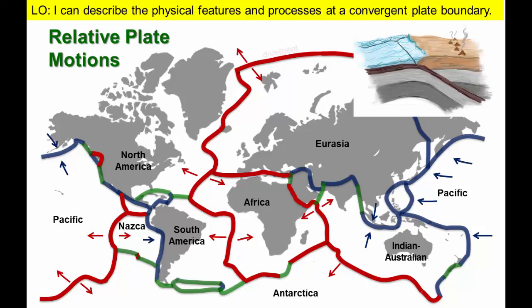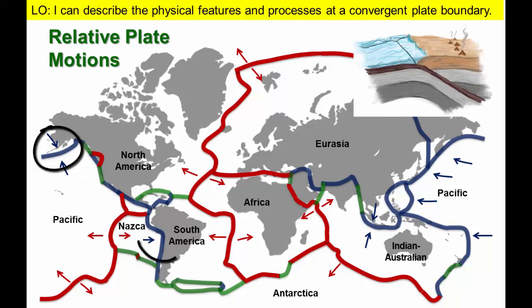Plates move toward each other along convergent boundaries. This map illustrates divergent boundaries in red, transform boundaries in green, and convergent boundaries in blue. We can find examples of convergent boundaries where oceanic lithosphere is consumed below continental lithosphere here, where the Pacific plate is destroyed below the North American plate in Alaska, where the Nazca plate collides with the western margin of South America, and where the Indian-Australian plate is consumed below the Eurasian plate.